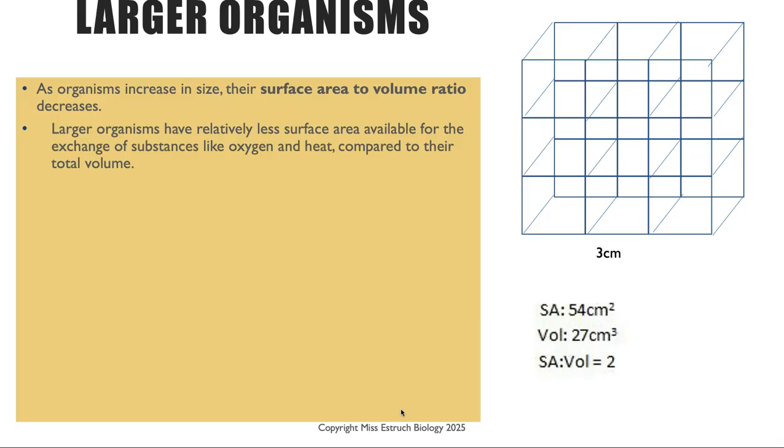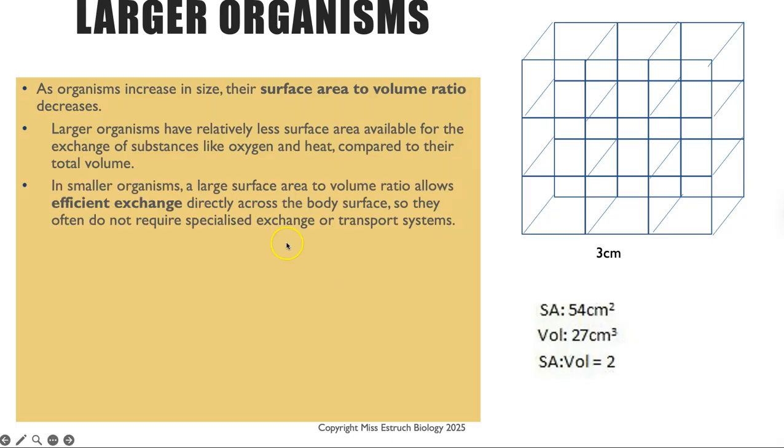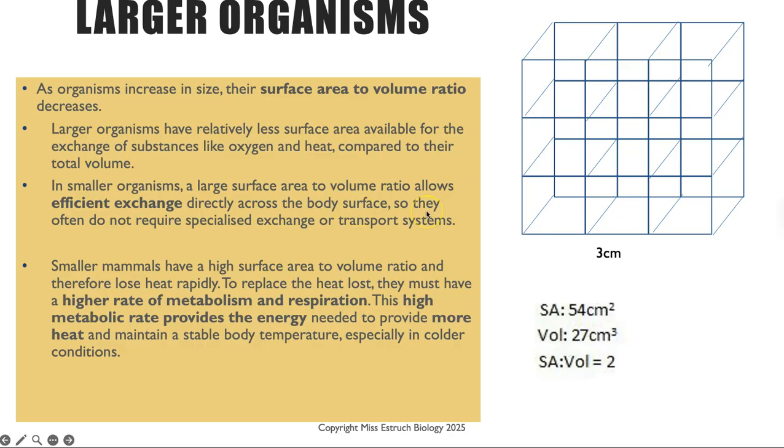Now going back to the idea of smaller organisms, we've already said that they've got a large surface area compared to their volume and that allows a sufficient exchange directly across their surface so they don't require that specialized exchange or transport system. Smaller mammals have a high surface area to volume ratio still and that is going to mean because they've got this large surface area to volume ratio they lose heat rapidly across their surface because they've got this large exchange surface. And that is why to replace that lost heat they have a very high metabolic rate and high rate of respiration. And this high metabolic rate is what is providing the energy so that they can maintain a stable body temperature especially in colder conditions.